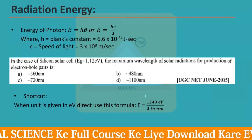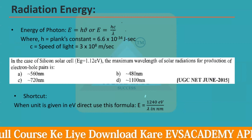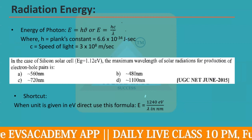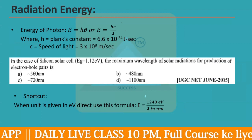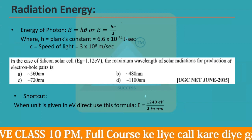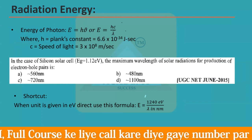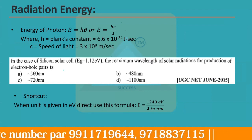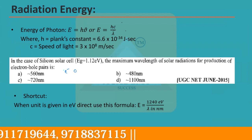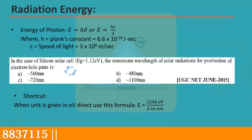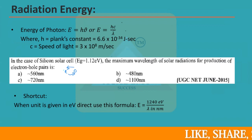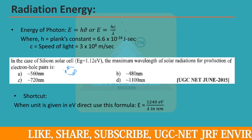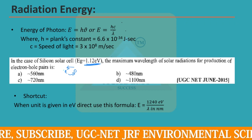Now let's look at some numerical questions on radiation energy. For a silicon solar cell, the energy required to produce one electron-hole pair is 1.12 electron volts. We need to find the maximum wavelength of solar radiation that can produce these electron-hole pairs. The creation of an electron and a hole, which exchange charges to provide electricity, defines this threshold.